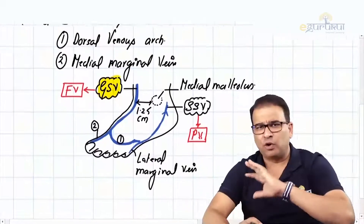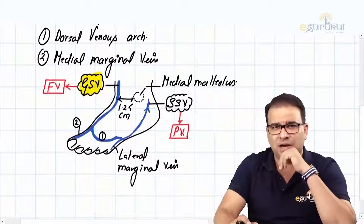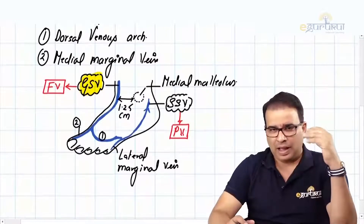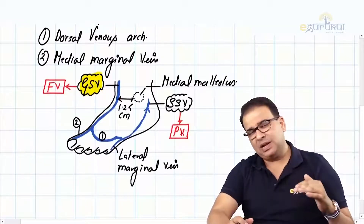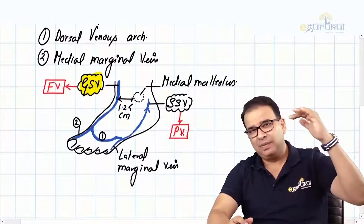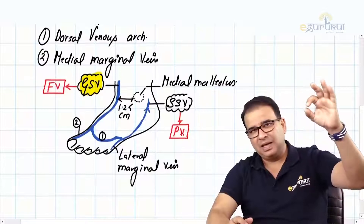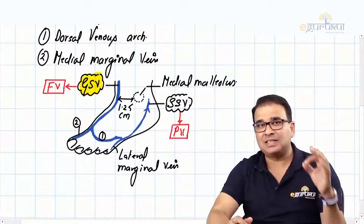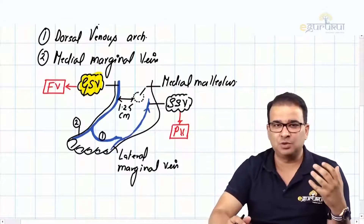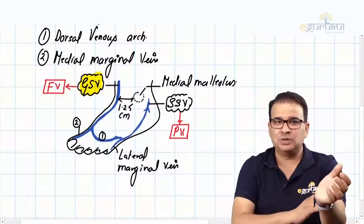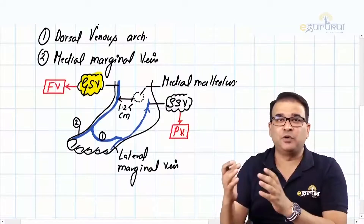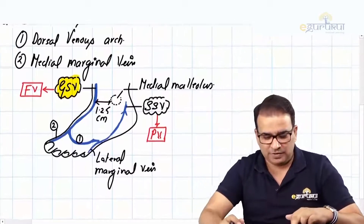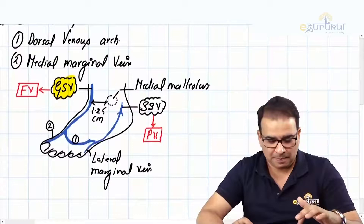This is something about the formation and how it starts. Now I mainly have to look into how the great saphenous vein goes up, drains, and what the major perforators are. That's the main question - and I'm sure in orthopedics also - the perforators of the great saphenous vein lie at what level.